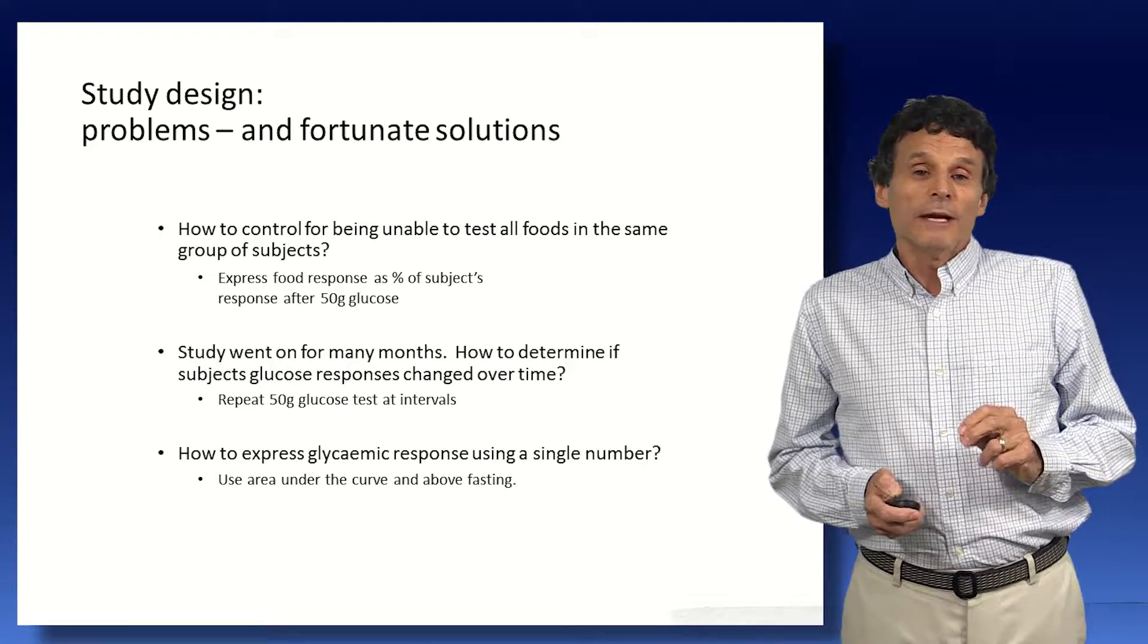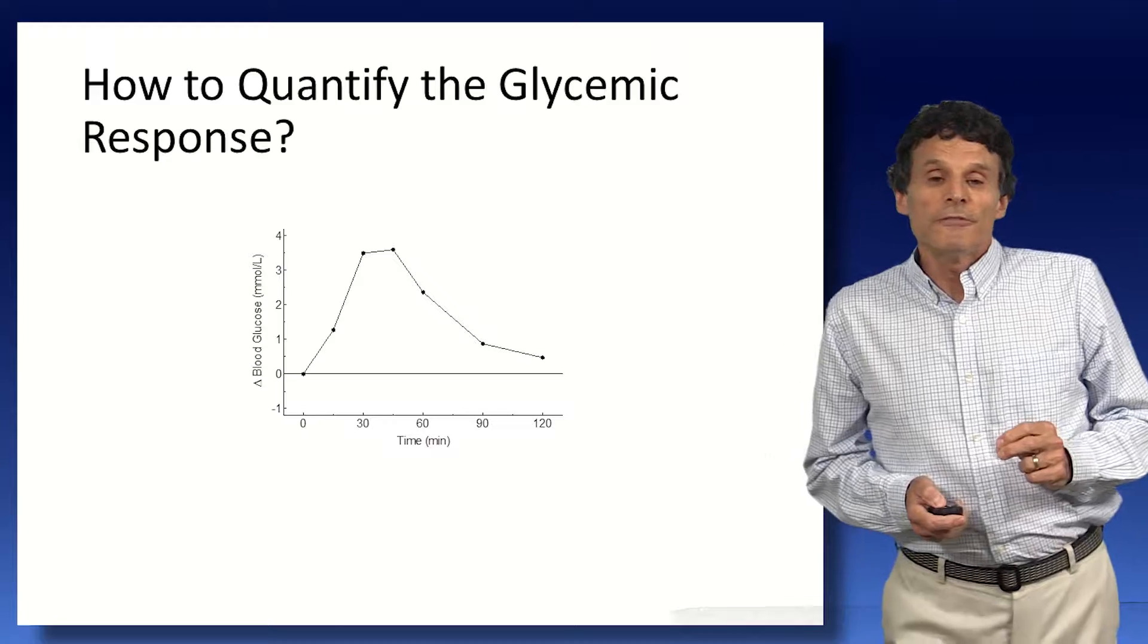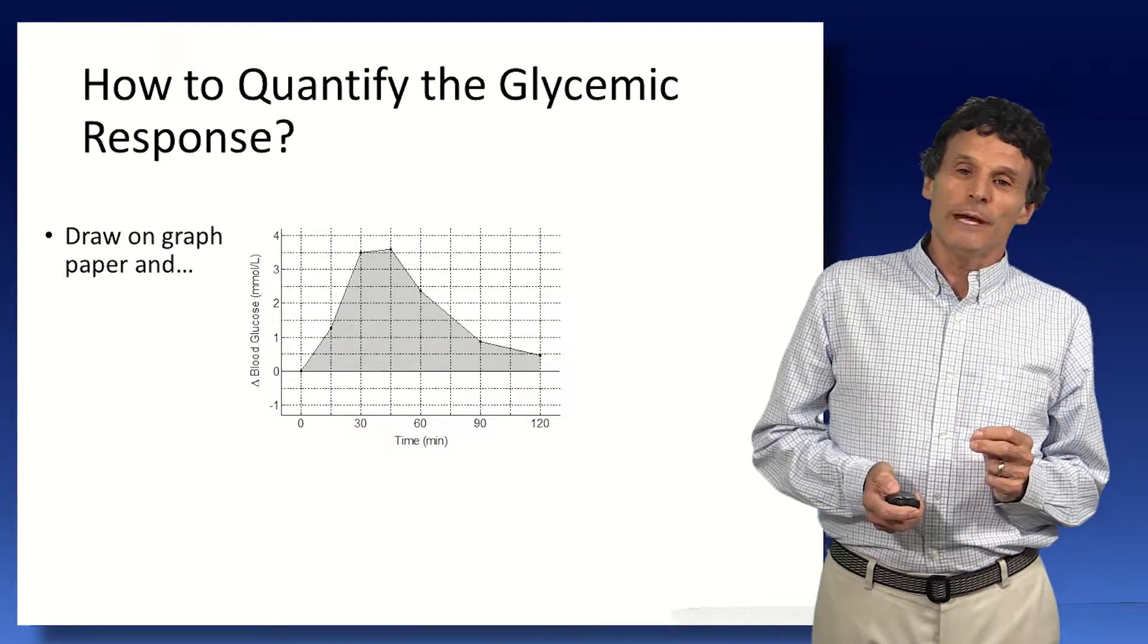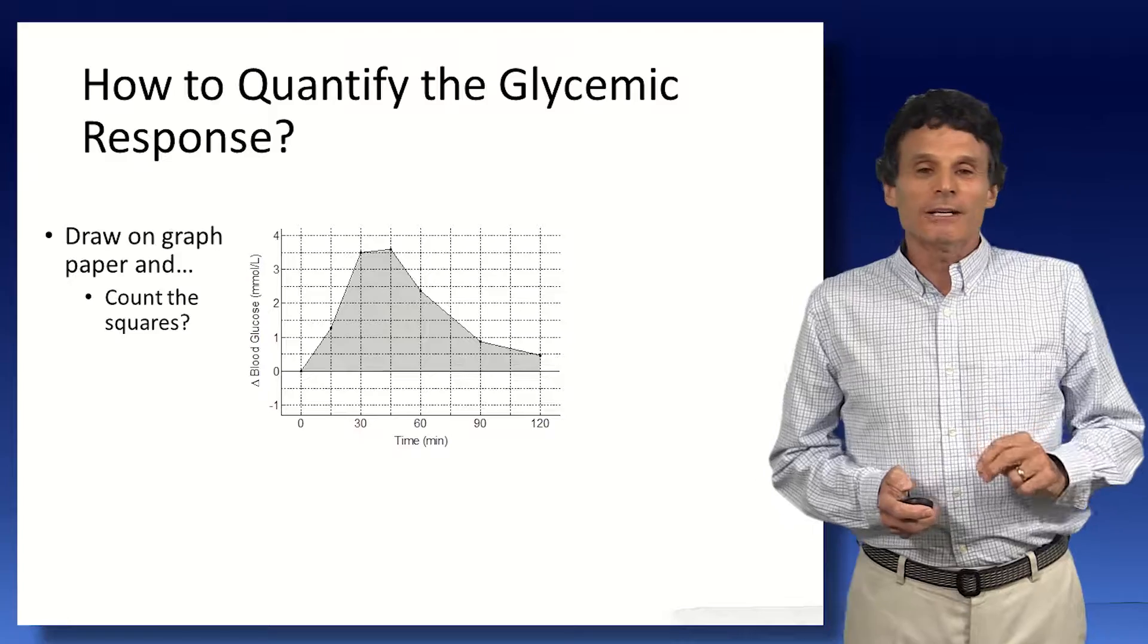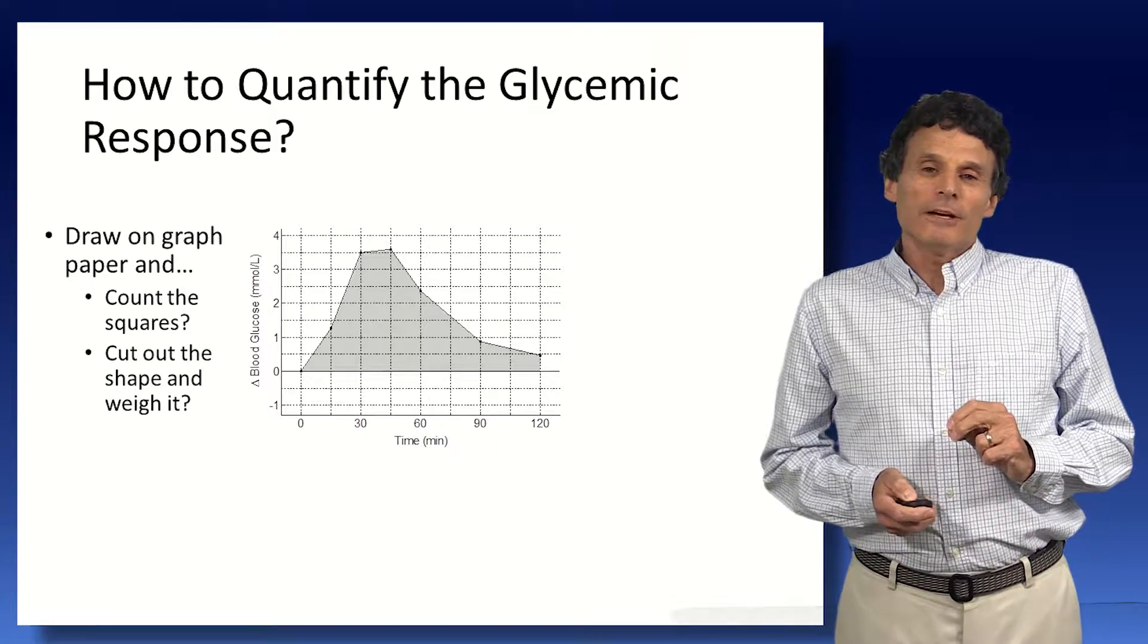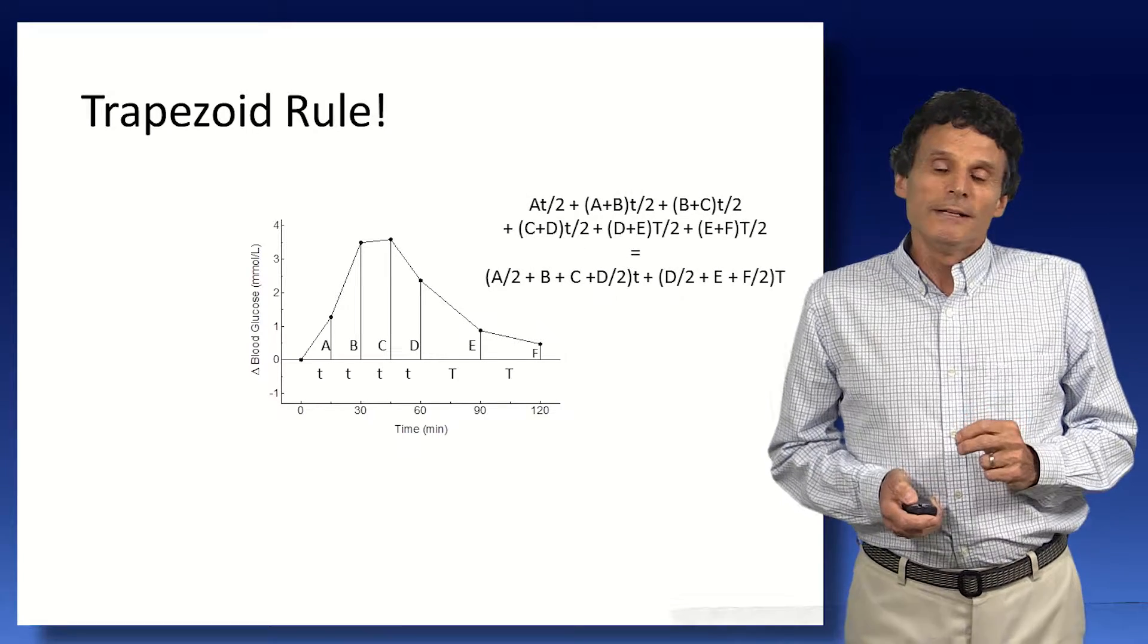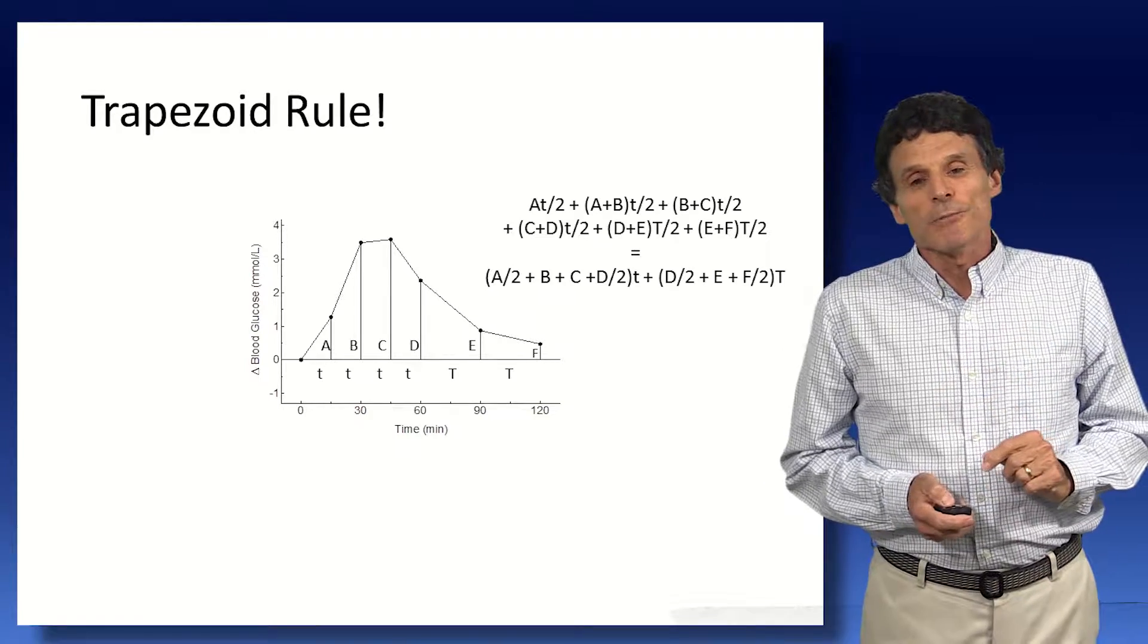Finally, we had to figure out how we could calculate or express the area under the curve. What we wanted was to find out the area under the curve above the fasting level, which is illustrated in the gray shading here. And we thought about perhaps we could draw this on graph paper and count the squares. But that didn't work because the lines go through the squares. Then we thought, well, maybe we could cut out the graph and weigh it. And well, that seemed really impractical. And as I reflected on this, I suddenly realized that we could break this curve up into a series of trapezoids and use our elementary geometry from high school to calculate the area under the curve using the trapezoid rule. And we could simplify this down to an equation in the bottom there, which is pretty simple.